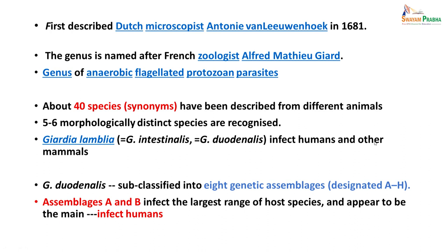It was first described by Dutch microscopist Antonie van Leeuwenhoek in 1681. The genus is named after French zoologist Alfred Mathieu Giard, and it is a genus of anaerobic flagellated protozoan parasites. About 40 species have been described from animals. Five to six morphologically distinct species are recognized. Giardia lamblia, also known as Giardia intestinalis or Giardia duodenalis, infects humans and other mammals. It is sub-classified into 8 genetic assemblages designated A to H, with assemblages A and B infecting the largest number of host species and appearing to be the main assemblages that infect humans.